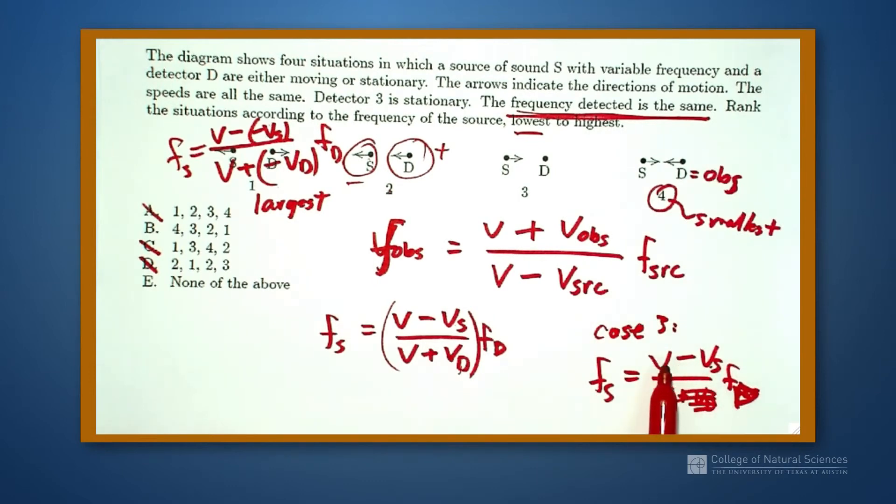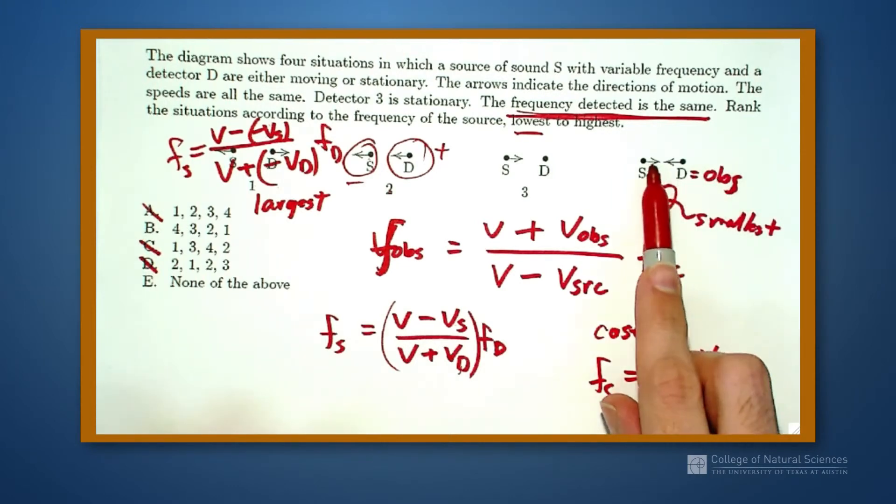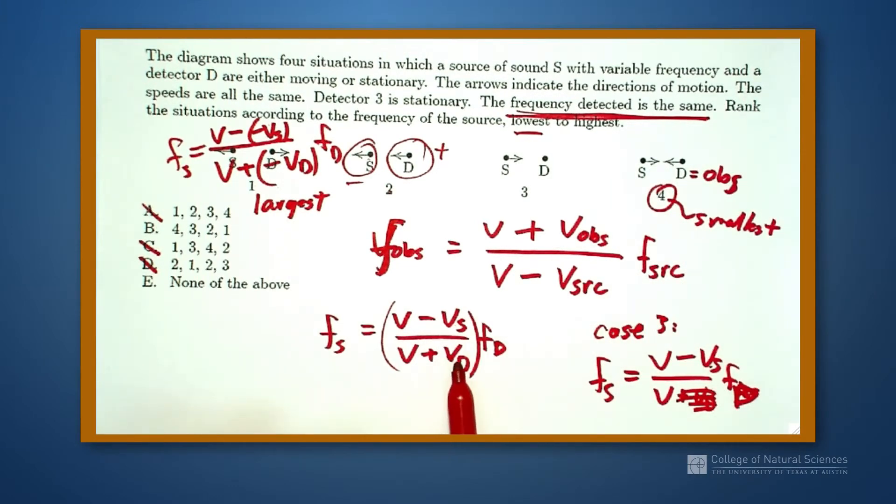So in case 3, we have a small number dividing by a medium number. Over here, we had a small number dividing by a large number.